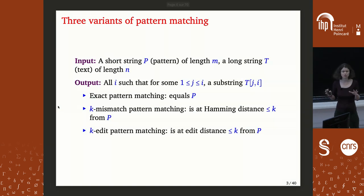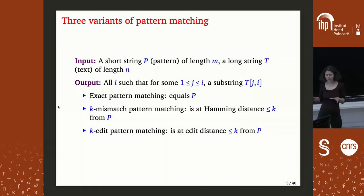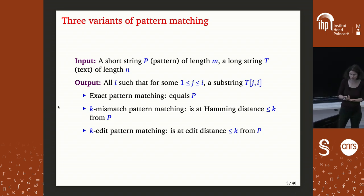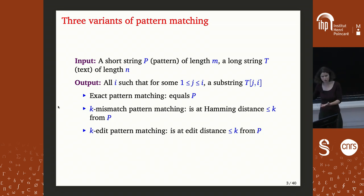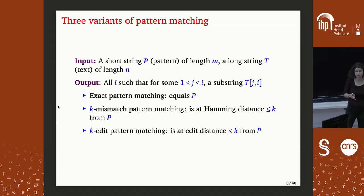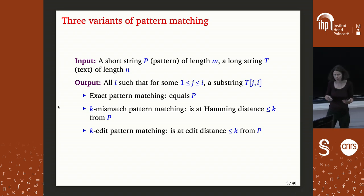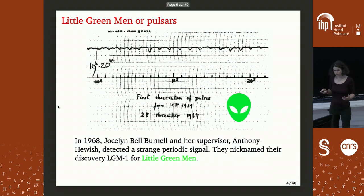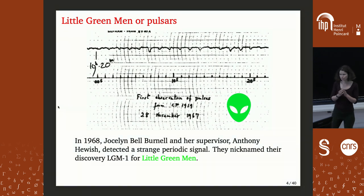Let me formalize the three variants of pattern matching I will discuss today. The first is exact pattern matching — looking for substrings equal to the pattern. The second is k-mismatch pattern matching — substrings at Hamming distance at most k from the pattern. The third is k-edit pattern matching — substrings at edit distance at most k from the pattern.